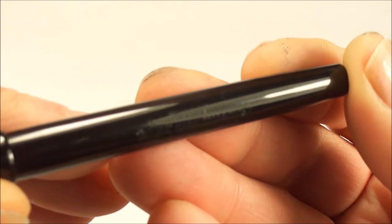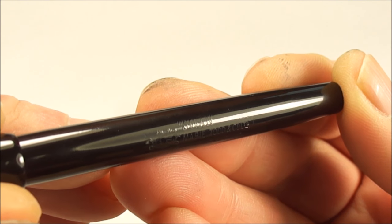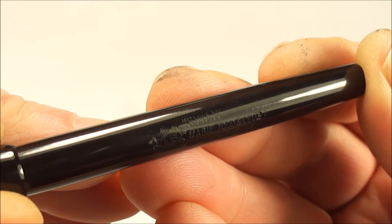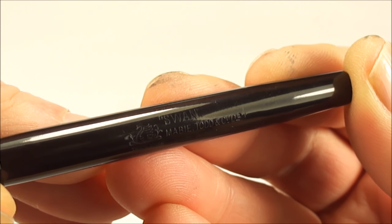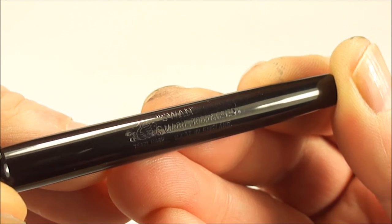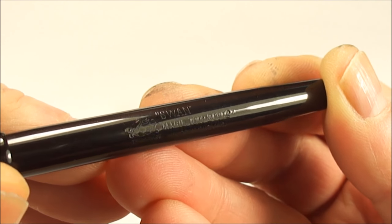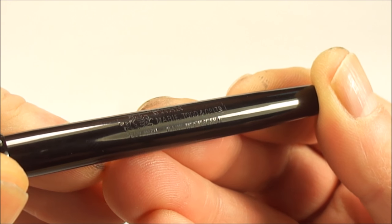Let's first of all show you the barrel imprint here. The barrel imprint reads Swan, and then next to that, although it's worn, it does actually say self filler. Underneath it has Mabie Tod and Company made in England. For this age of pen, I would say that is a clear imprint.